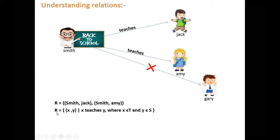This is R, which represents a relation where the ordered pair X comma Y is such that X teaches Y. X is the teacher here, Smith, and Y are the students. So Y can take the value of Jack and Amy, and X can take Smith.